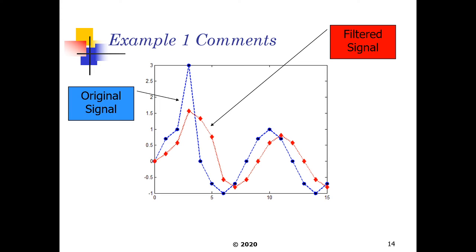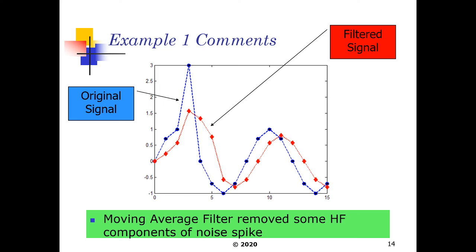So as such, a moving average filter, being a low-pass filter in particular, it removes some of the high frequency components of that noise spike. And it works in this case because of only the high frequency components getting filtered accordingly.